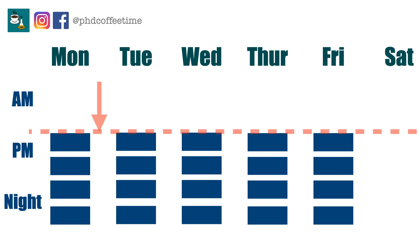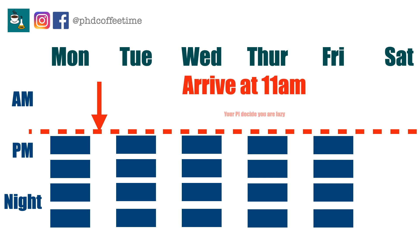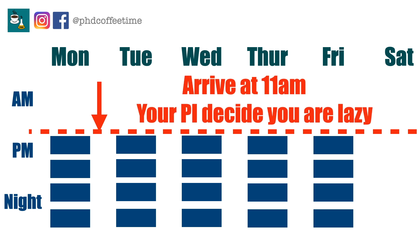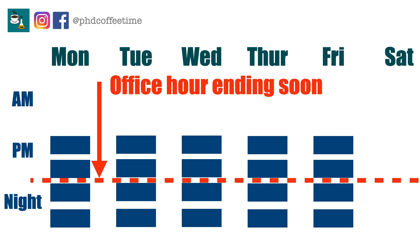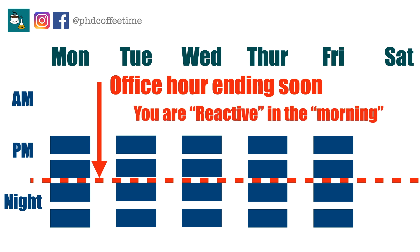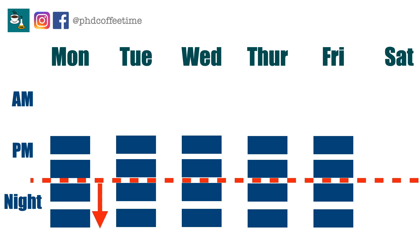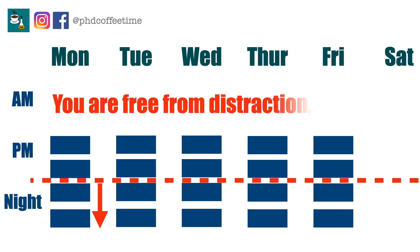If you arrive late in the afternoon, your PI might see you at 11 a.m. and at that moment decide that you are a lazy student. Also notice that office hours end at 4 or 5 p.m. depending on which country you are in. There are deadlines and emails to reply to, and right after you start your day you are spending most of your prime energy in the morning reacting to everything coming at you.